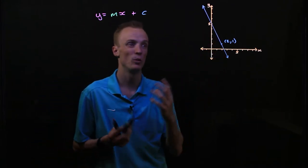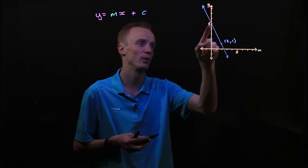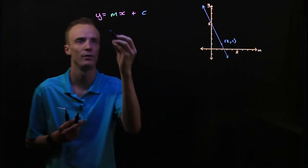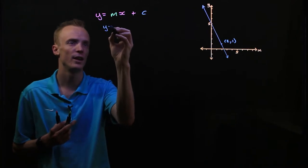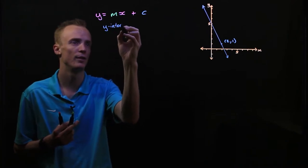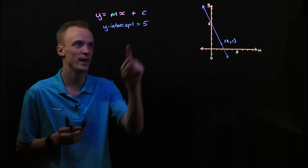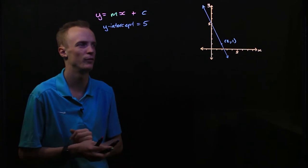That has actually been given to us. We can see that it cuts the y-axis at the point 5. So our line here has a y-intercept of 5, meaning our c value is equal to 5.